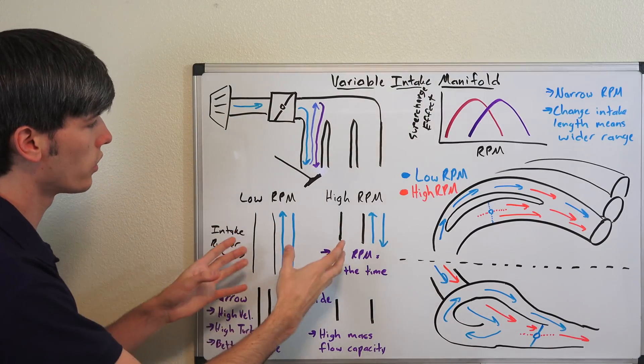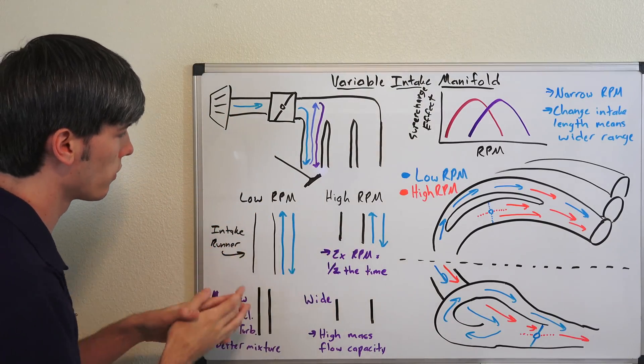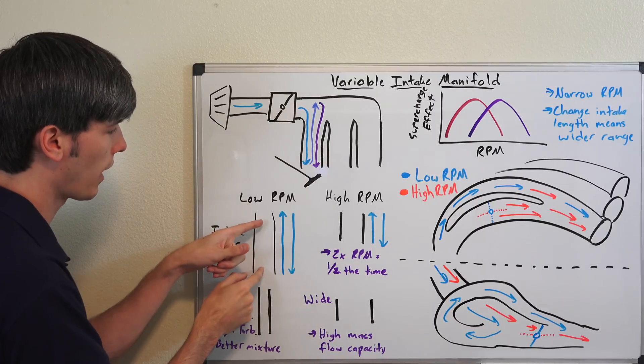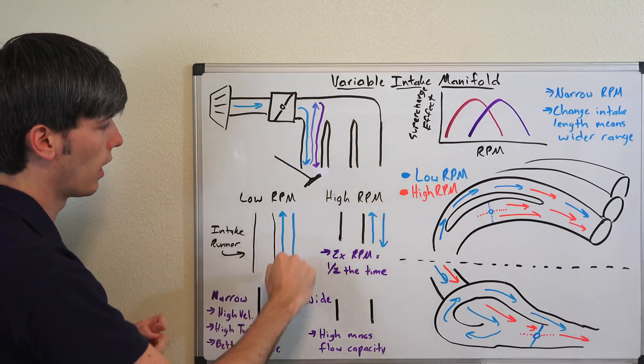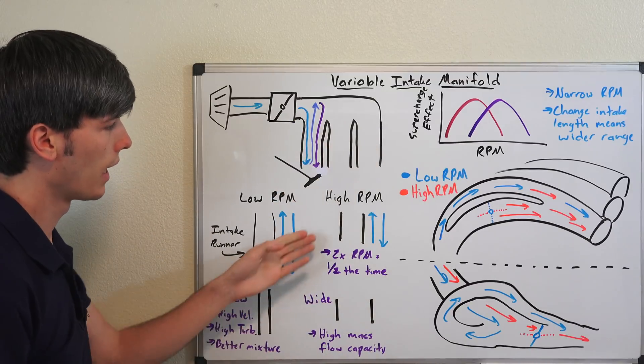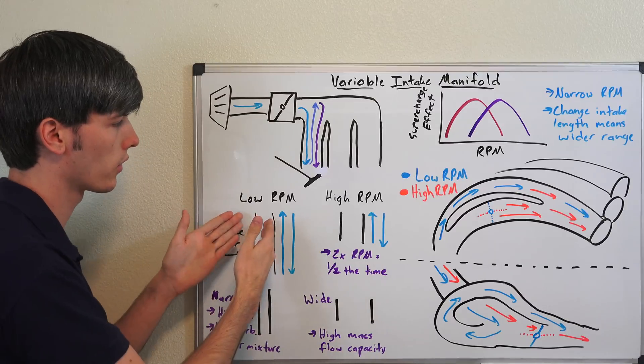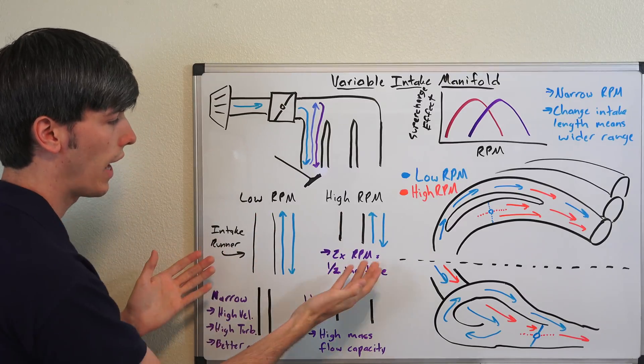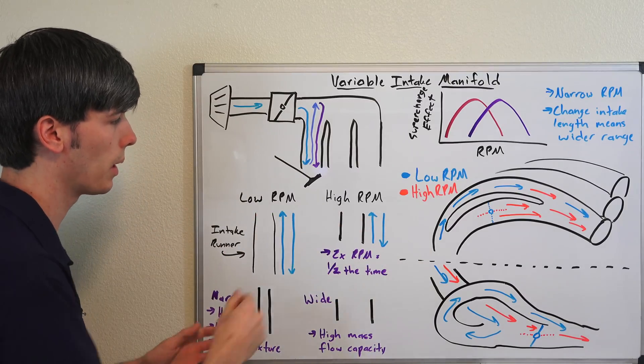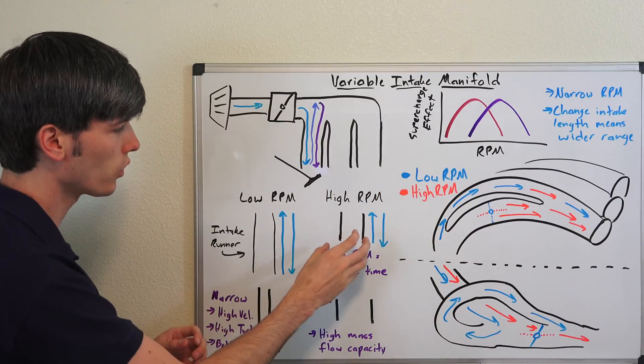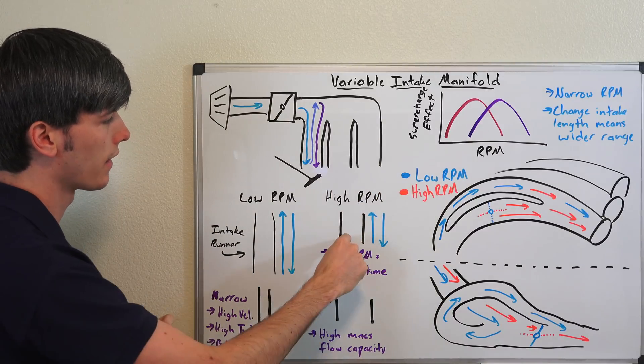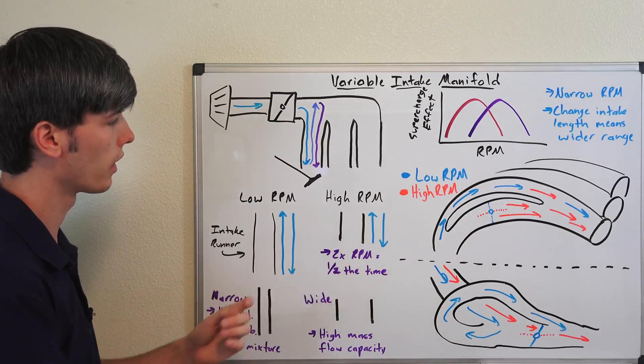So what do you want to do with your intake manifold itself? Well at lower RPM it's better to have a longer runner because you need more time for that pressure to go back to the plenum then come back down. As you get into the higher RPM, let's say you're at 3,000 here, 6,000 here, you're going to have half the time because you've got double the RPM for that pressure wave to hit the back of the plenum and come back down. So half the time, half the distance, and that means you'll be able to get that same benefit. So shorter is going to be better at higher RPM.